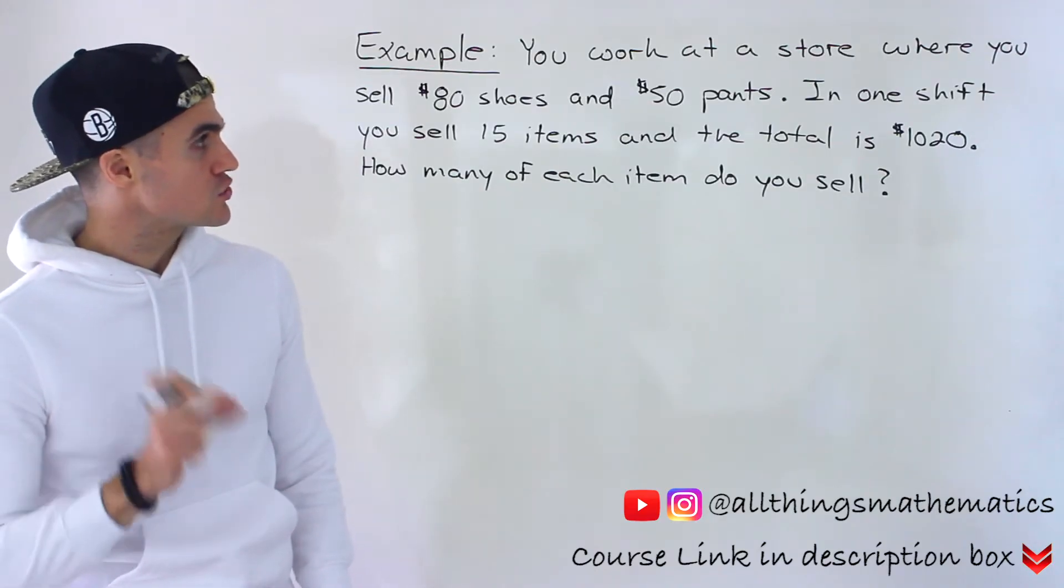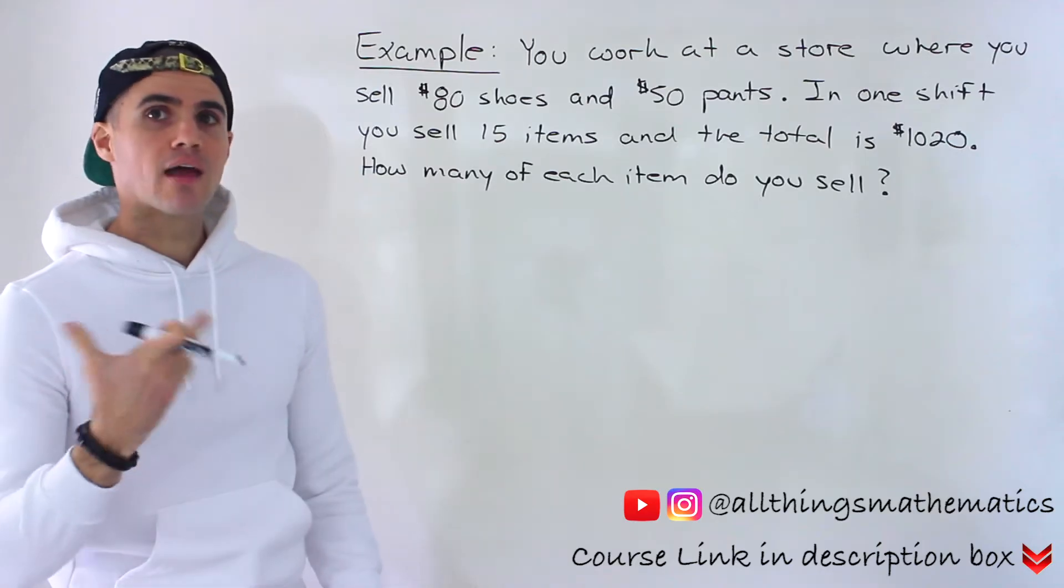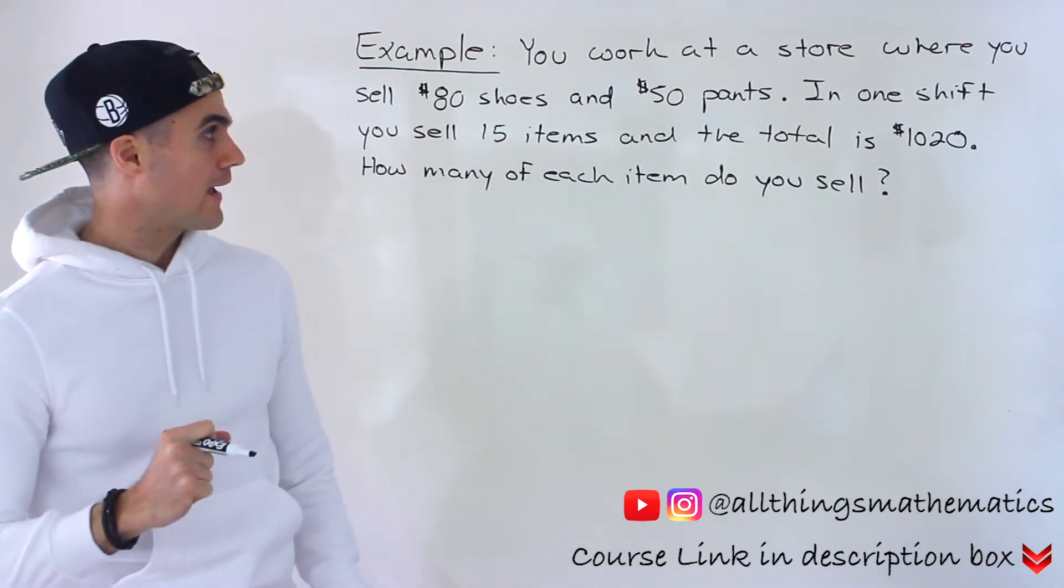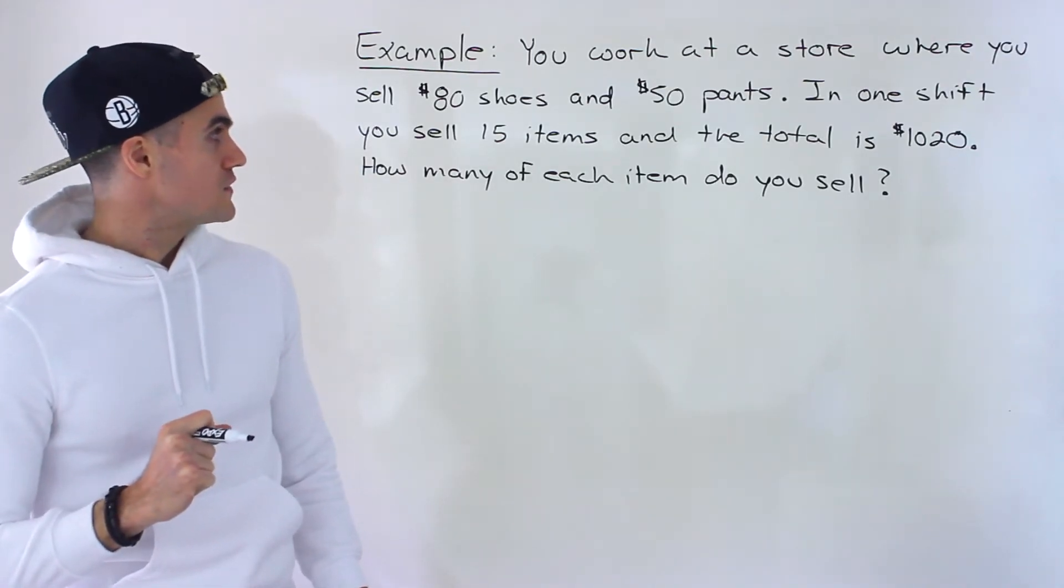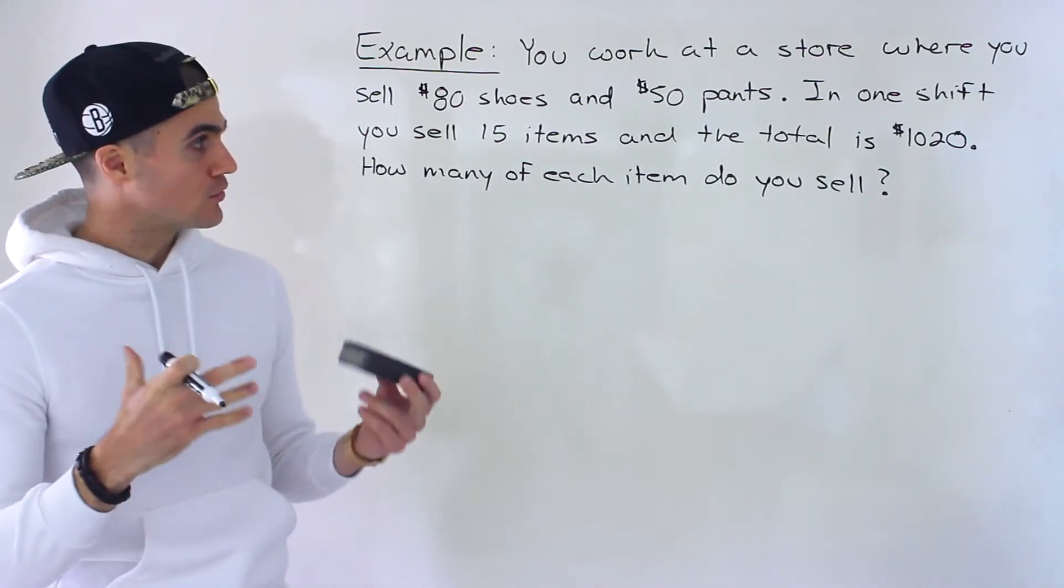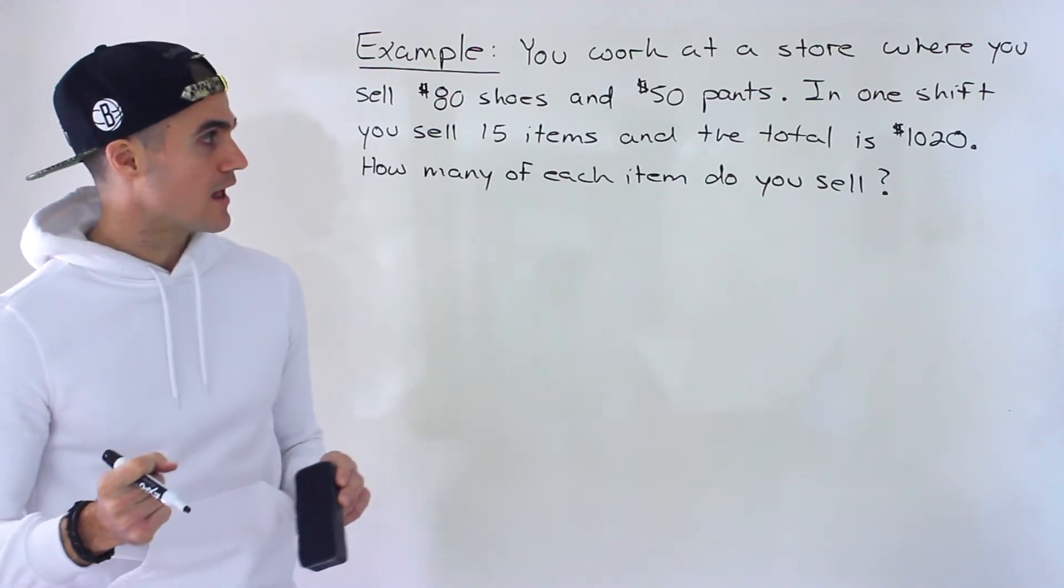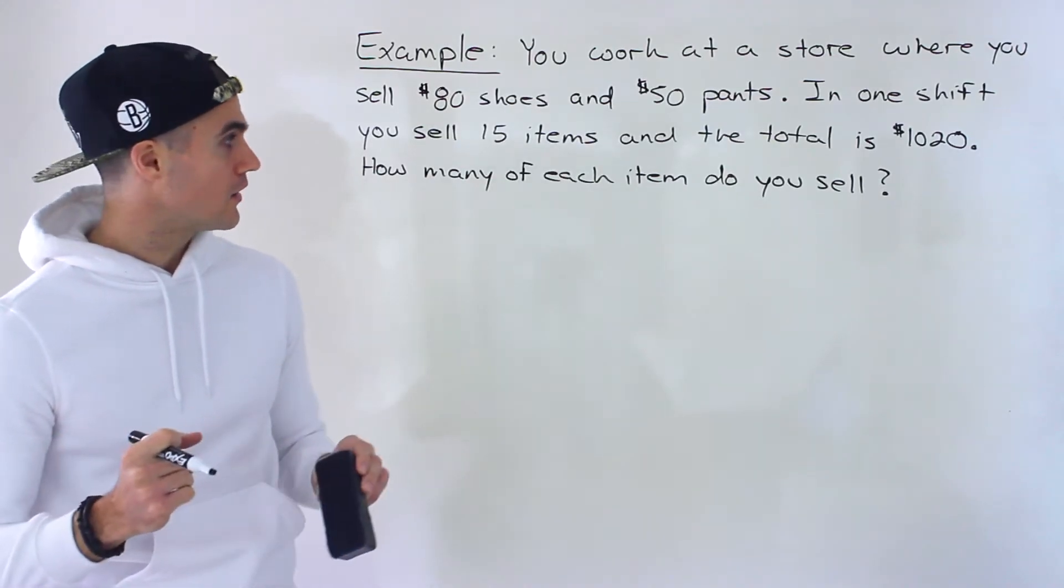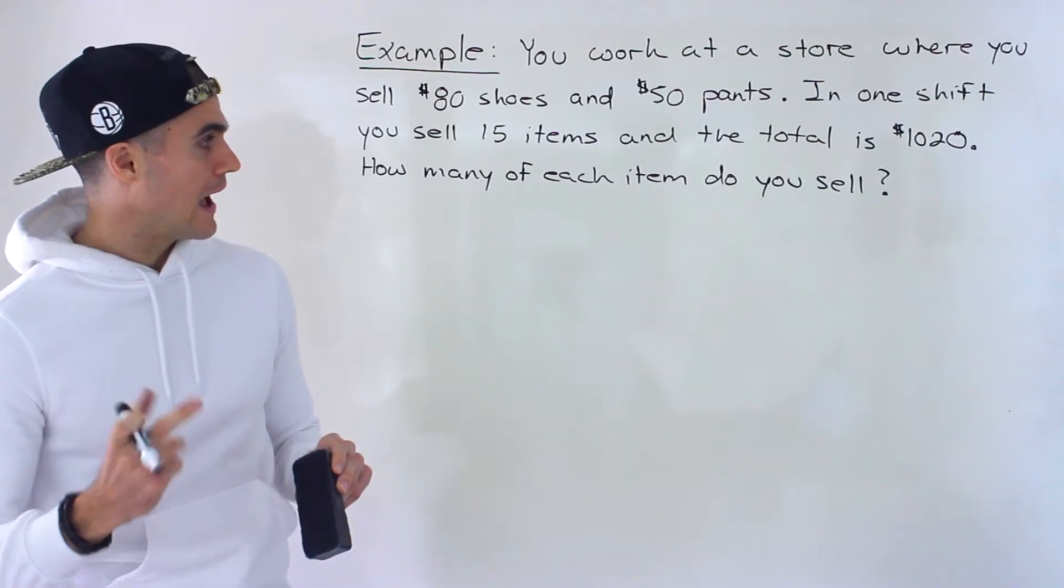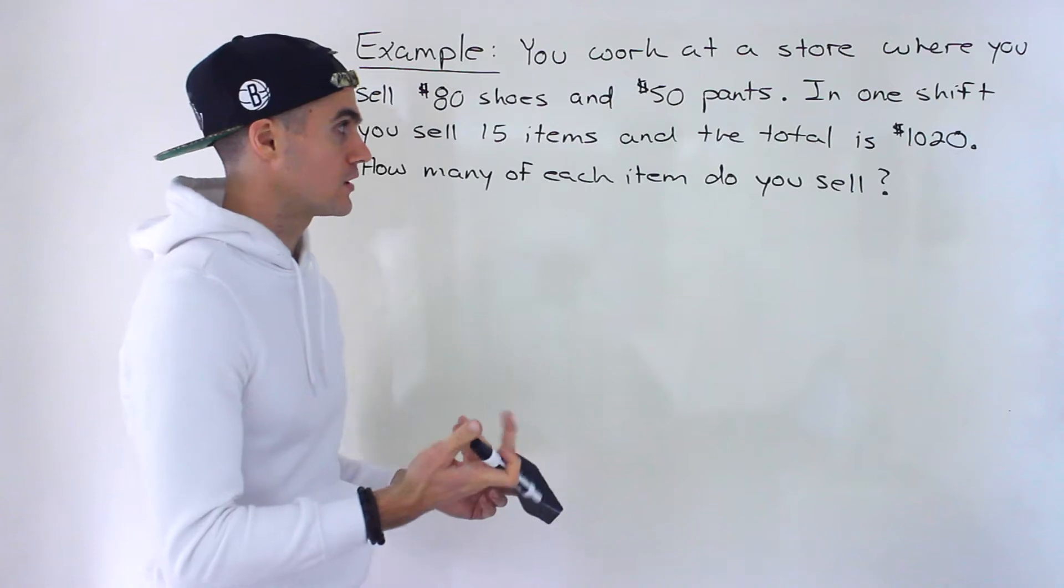So we're told that you work at a store where you sell $80 shoes and $50 pants. In one shift you sell 15 items in total and then the total amount that those items sell for is $1,020. And we have to figure out how many of each item do you sell? The quantity over here.